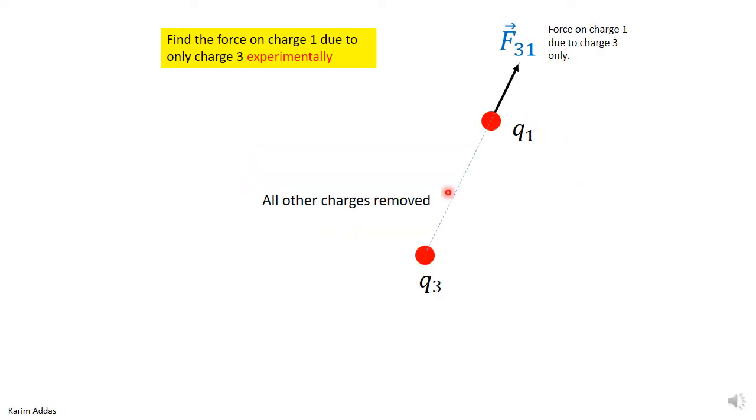And take away all the charges and keep only charge three and measure experimentally the force on one due to three. This force will be called F31. The second index is the charge that you're getting the force on and three is the charge due to which charges.